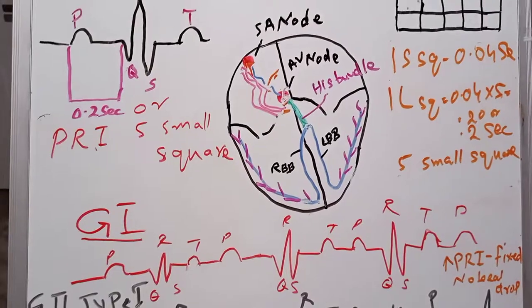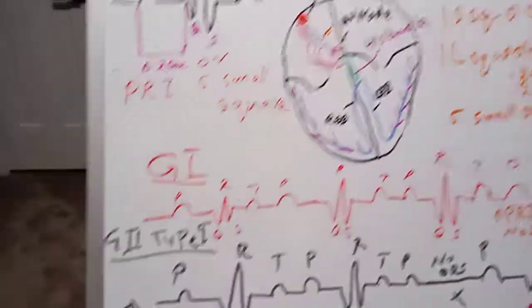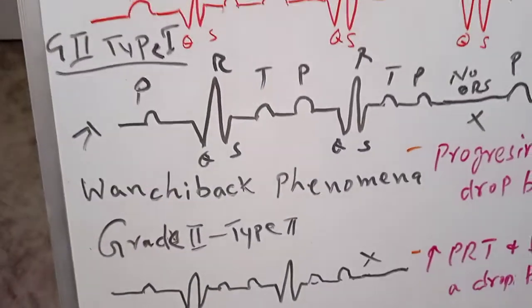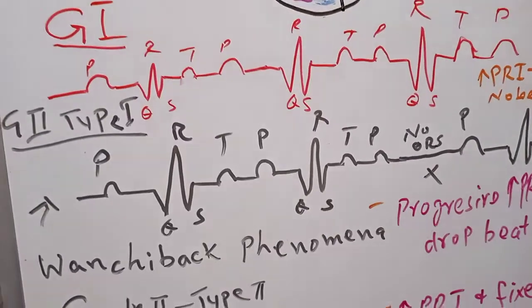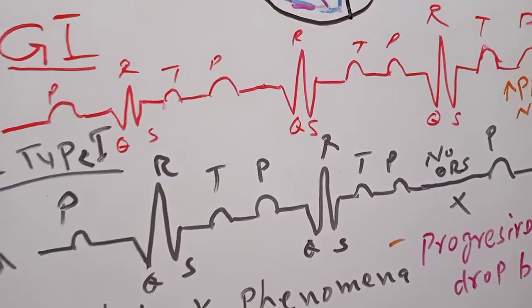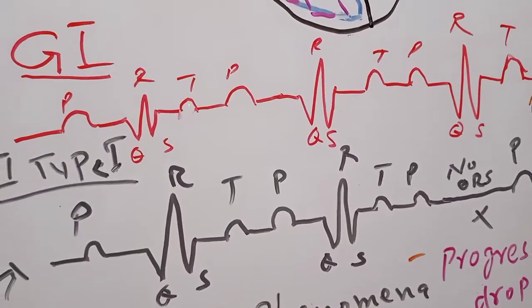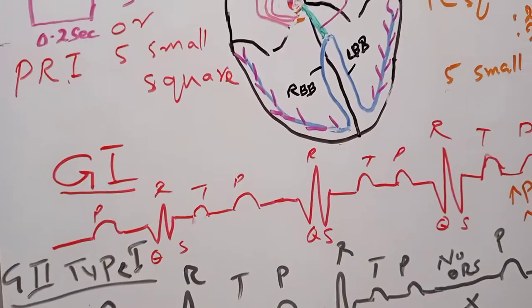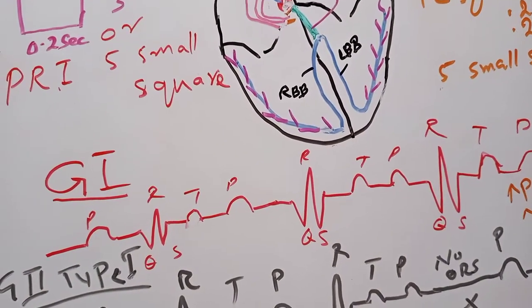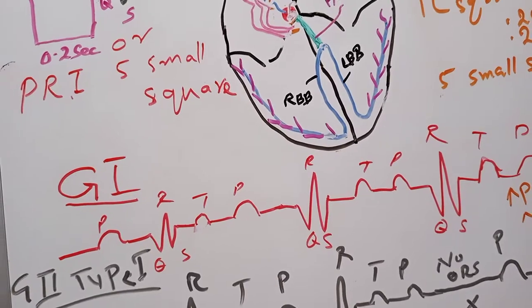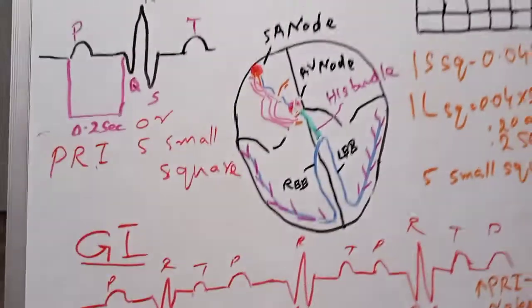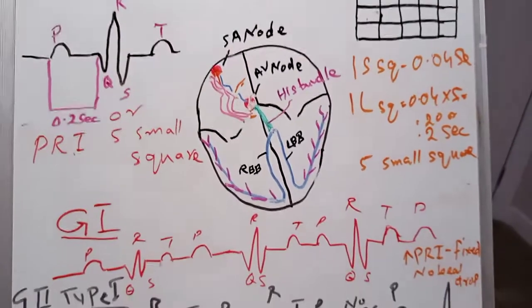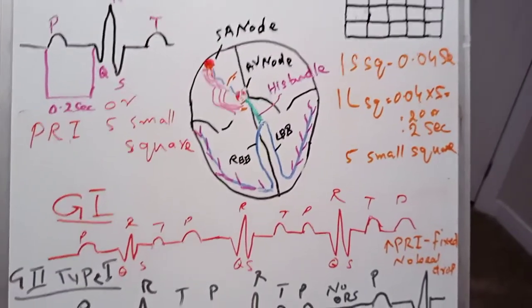The causes of heart block include cardiomyopathy, structural abnormality, increased vagal tone, or medications such as calcium channel blockers, beta blockers, or digoxin. The majority of heart blocks are benign, but some are dangerous and need to be treated.